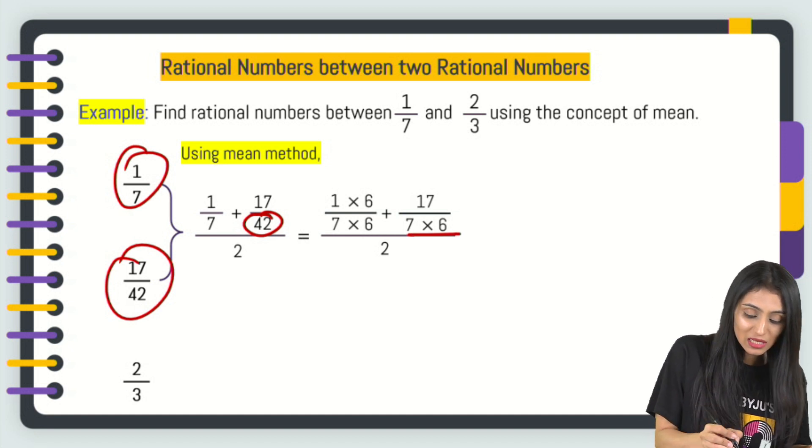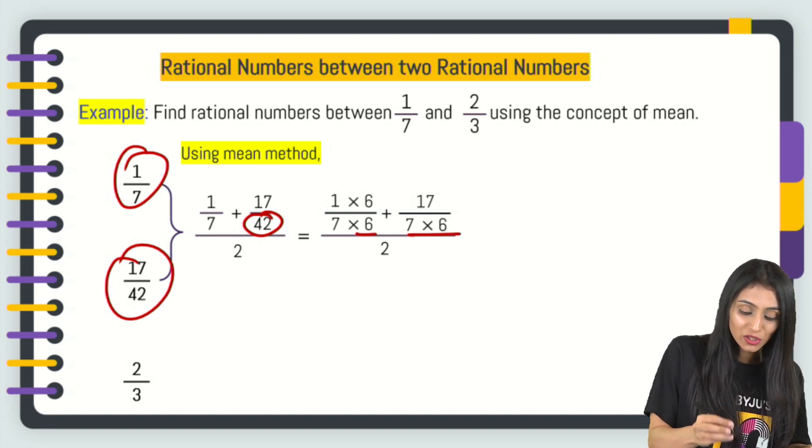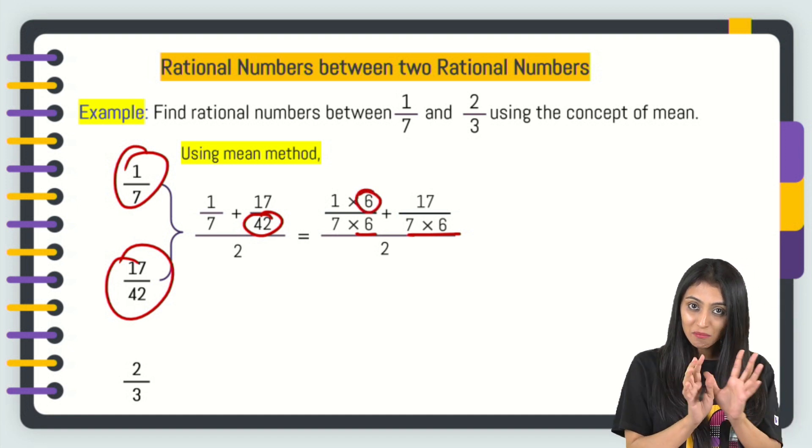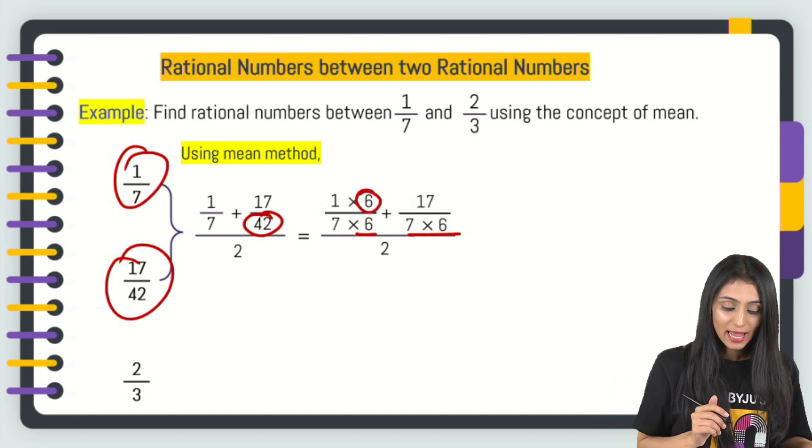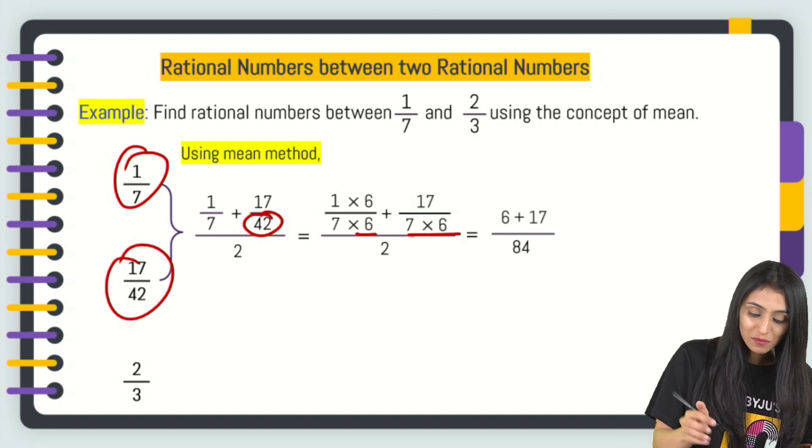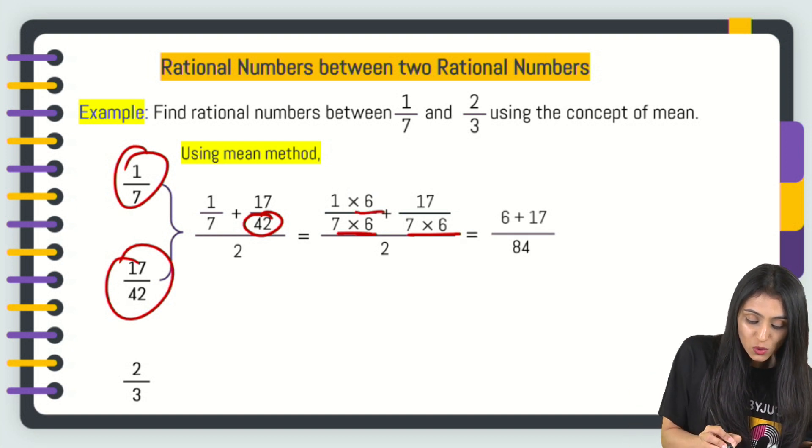Since this is 7 times 6, let's multiply 6 in the denominator here. I'll have to multiply 6 in the numerator as well because I'm making their denominator similar. Rest everything. 1 times 6 is 6. Denominator is going to be 52.